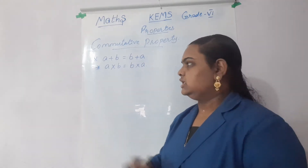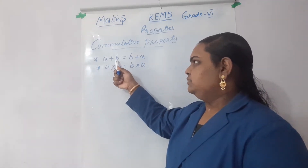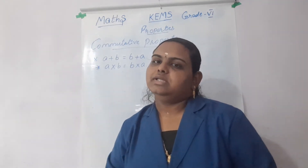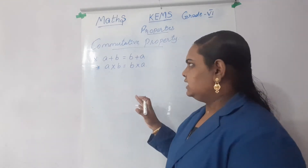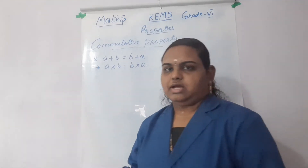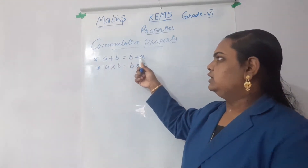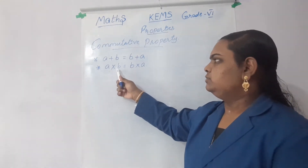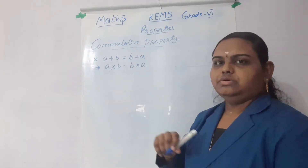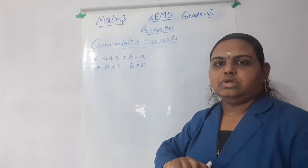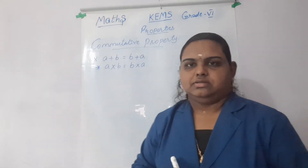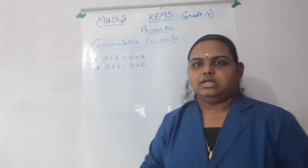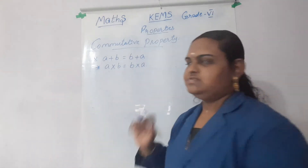What is the condition of addition? A plus B equal to B plus A. In closure property we have learnt the conditions. Like that we have conditions in other properties. So A plus B is equal to B plus A, then for multiplication A into B equal to B into A. The commutative property is only closed under addition and multiplication. It is not closed under subtraction and division.